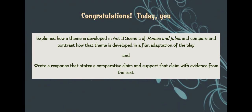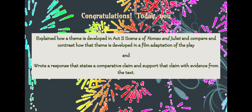Congratulations! You have completed Section 2, Lesson 4 of the Romeo and Juliet unit. In today's lesson, you explained how a theme is developed in Act 2, Scene 2 of Romeo and Juliet, and you compared and contrasted how that theme is developed in a film adaptation of the play. And you wrote a response that states a comparative claim and supported that claim with evidence from a text.